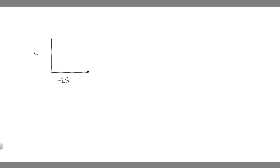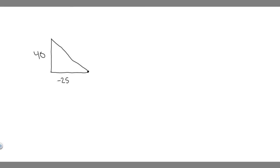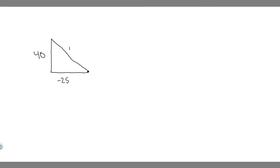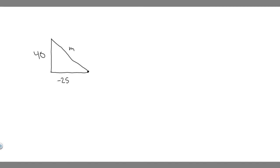Now we know both of these components, and we're solving for two different things in this problem. We're going to solve for the magnitude — which, if you draw it like a triangle, is the hypotenuse, this length right here. And then the direction is going to be a little different; essentially it's just the angle. I'll show you how that works after we find the magnitude.